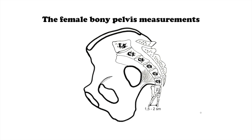Hi everyone, it's Schematic Mad and today we are going to talk about the female bony pelvis measurements. The size and shape of the pelvis is important for labor and delivery. The sacrum is a tapered wedge-shaped bone at the back of the pelvis consisting of five fused vertebrae. At the bottom of the sacrum is a tail-like bony projection called the coccyx.